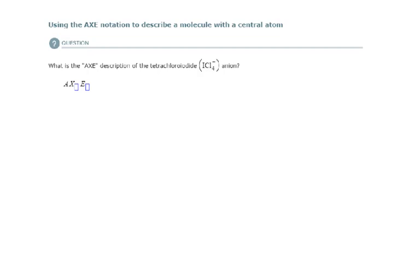Okay, so here we're going to practice using AXE notation to describe a molecule with a central atom. What AXE notation is, it's just a system that's going to characterize or describe molecules for us in terms of where is the central atom, what are the atoms bonded to the central atom, and are there any lone pairs around the central atom.